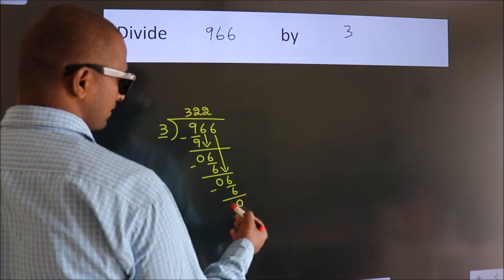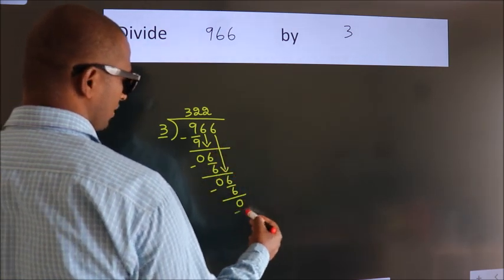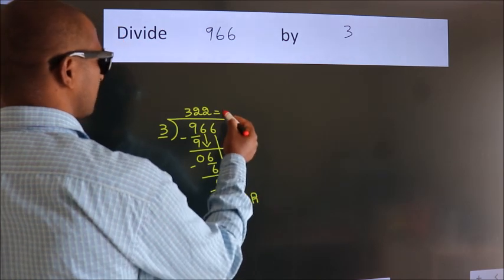After this, no more numbers to bring down. So we stop here. This is our remainder. This is our quotient.